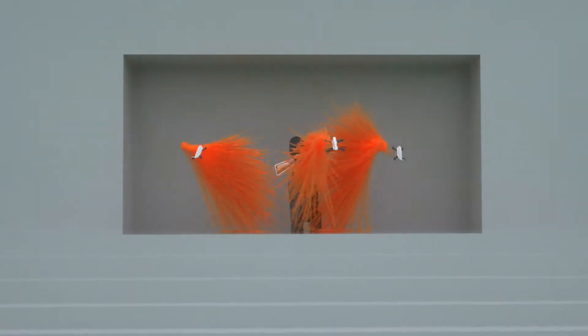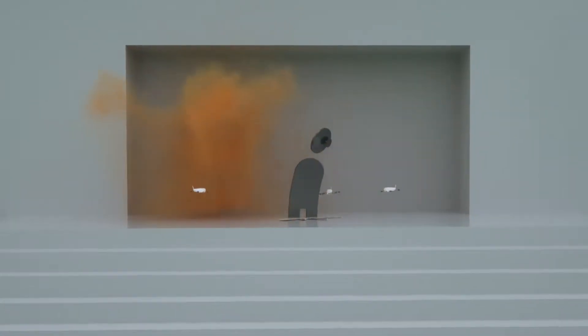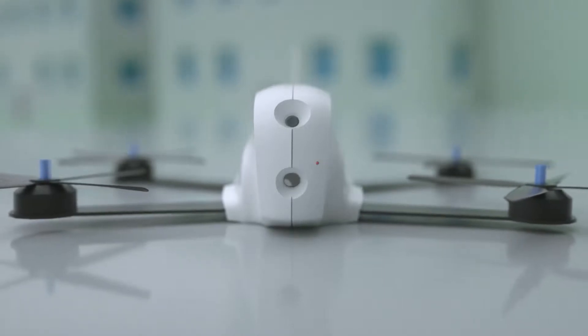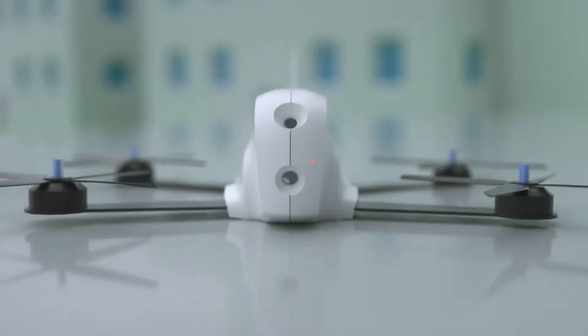Once taken down, the drones land to save power while monitoring the situation. The location and status of the shooter is streamed to law enforcement so they can make an arrest faster and safer.